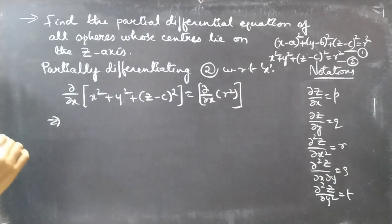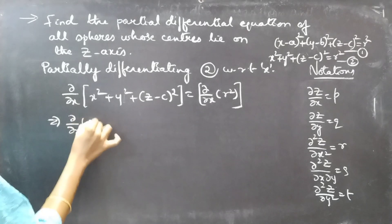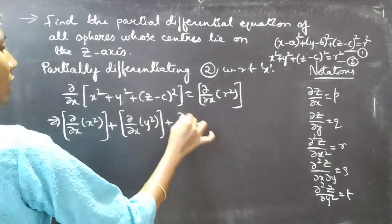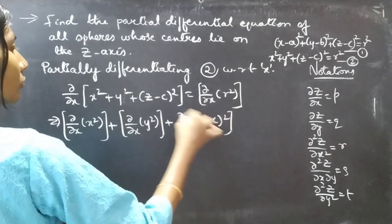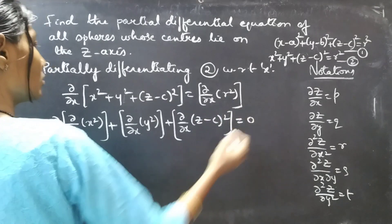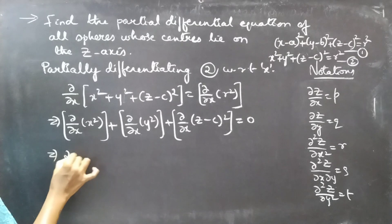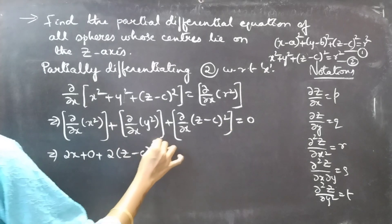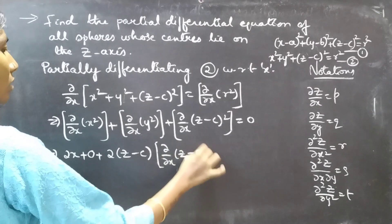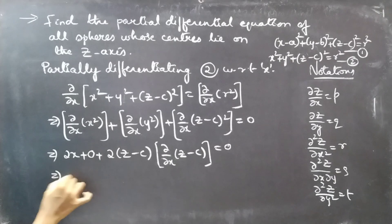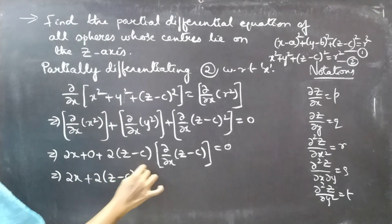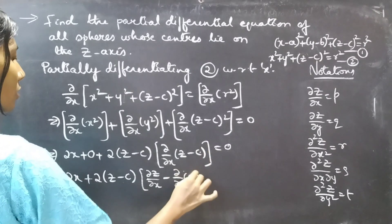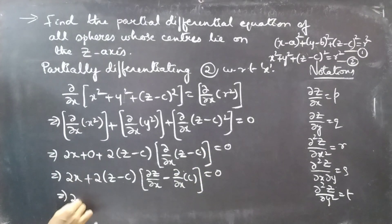Since we are partially differentiating with respect to x, y is treated as a constant. The partial derivative of x² with respect to x is 2x; the partial derivative of y² (constant in x) is 0; and the partial derivative of (z − c)² with respect to x is 2(z − c) · ∂(z − c)/∂x. The right-hand side gives 0. This simplifies to 2x + 2(z − c) · (∂z/∂x − ∂c/∂x) = 0.